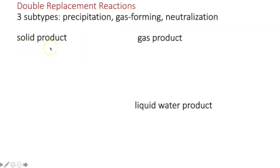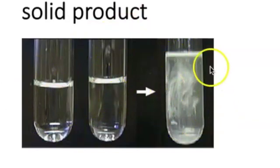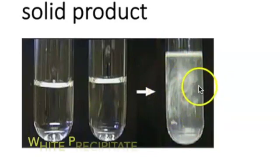The solid product is determined using the solubility rules, and you find that one of the products, or maybe both, but at least one is insoluble. Upon mixing two clear solutions, you can see double the volume, and what you have here is this white cloudiness.